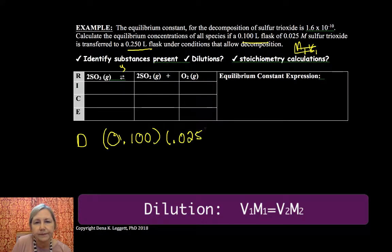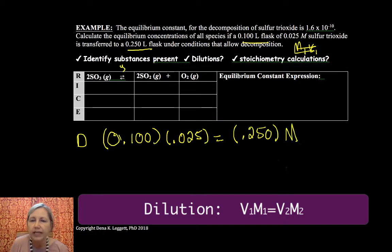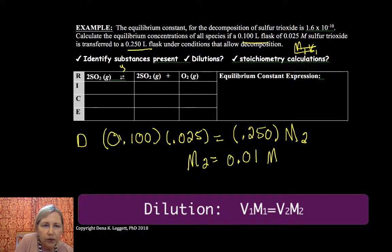So my volume one, I do it just to make a nice way of thinking about it. I know a lot of teachers do molarity one times volume one, but I like to do volume one molarity one because it gives me a consistent pattern. And my new volume is 0.250 and I need my new molarity. And when I solve for that new molarity, molarity two is 0.01 molar. So that's my new molarity.